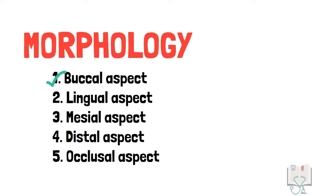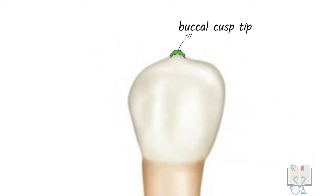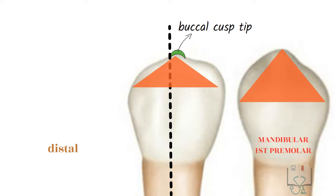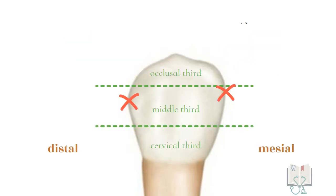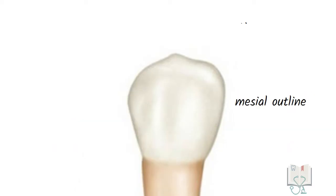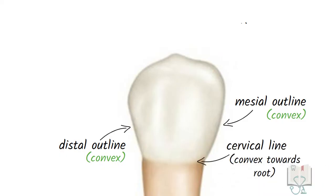Let us study the morphological details from each aspect, starting with the buccal aspect. The outline form of the crown is trapezoidal in shape. Only the buccal cusp is seen as the smaller lingual cusps hide behind it. The tip of the buccal cusp is slightly mesial to the midline axis of the tooth. Compared to the first premolar, the cusp of the second premolar appears blunt and rounded. The distal cuspal slope is longer than the mesial cuspal slope. Both the mesial and distal contact areas are in the middle third. Both mesial and distal outlines are slightly convex, as is the cervical line with convexity towards the root. The buccal surface is smooth and convex with a prominent buccal ridge running from the cusp tip to the cervical line.